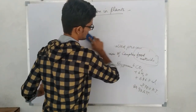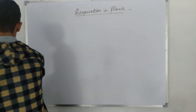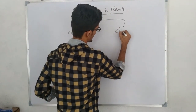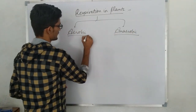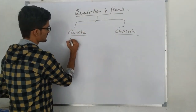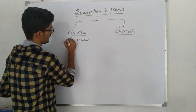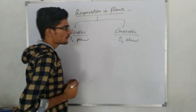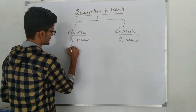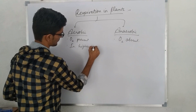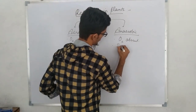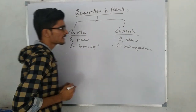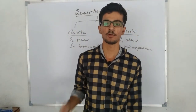There are two simple types of respiration. The first is aerobic respiration — in this, oxygen is present, and it is present in higher organisms. The second is anaerobic respiration, which occurs in microorganisms. In aerobic respiration, there is complete breakdown of food molecules.